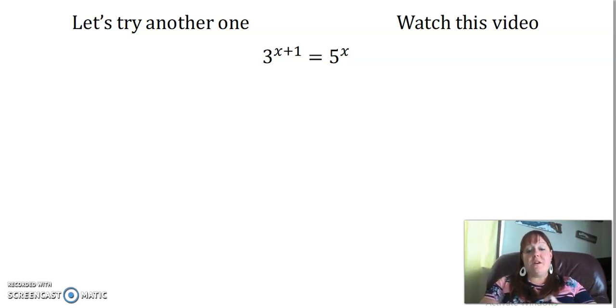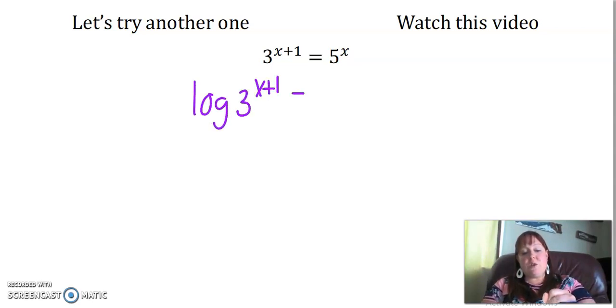So let's just use logs to get the x's by themselves. We're going to take the log of both sides. And as long as we do it to both sides, it's totally legal to do this. And then what do we know about exponent rules for logs?